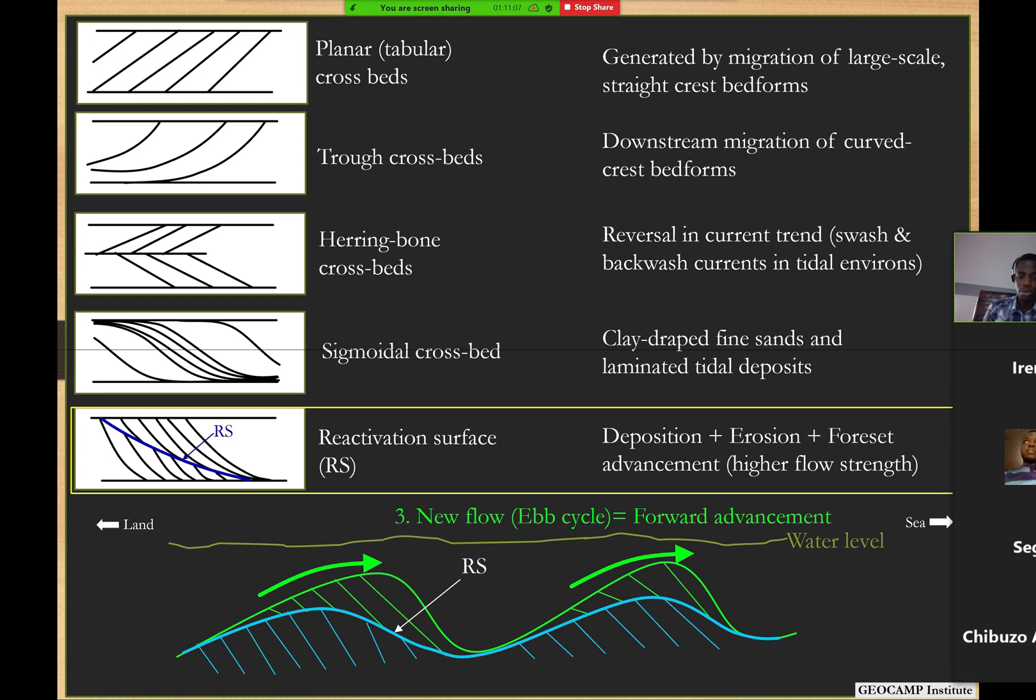When the second set of dune comes and erodes the pre-existing one and deposits its own, this configuration is also created where you have faucet planes dipping in one direction but separated by some surface that shows some kind of reactivation of the same condition that deposited the first one. But in these very conditions, yes, it's also a signature of tidal settings, tidal environment or tidal setting.